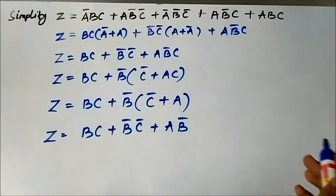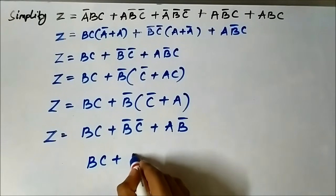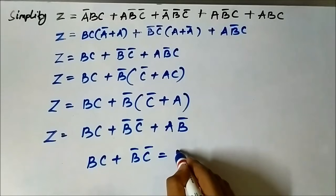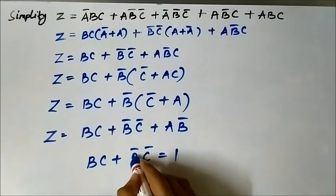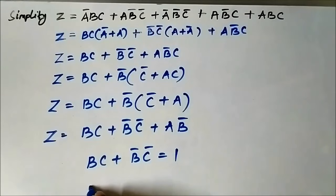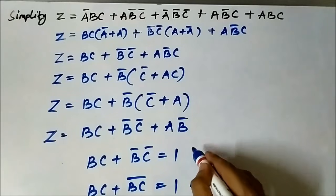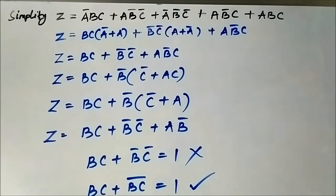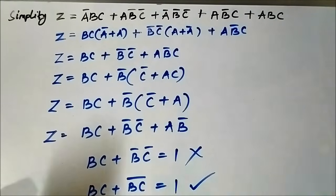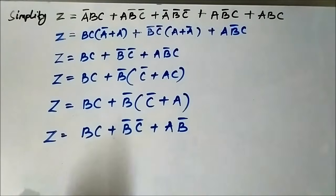This is the final expression. Do not make the mistake of thinking that b·c + b̄·c̄ equals 1. That is wrong, because here the individual variables are complemented, not the whole expression. If it were b·c + (b·c)̄, then it would equal 1. But here individual variables are complemented, so that simplification does not apply. Students sometimes make this mistake in a hurry, so be careful.